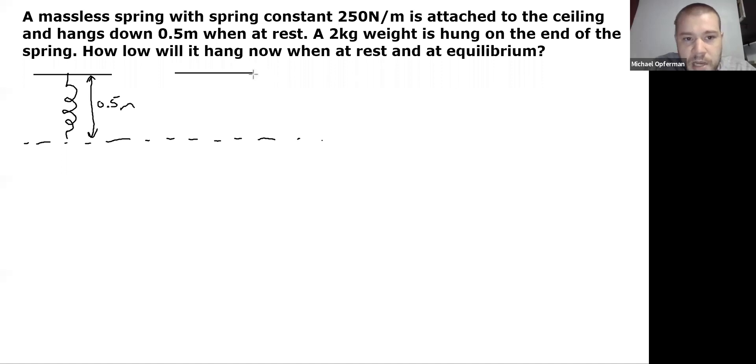Once we hang this object from the spring, it is going to cause it to sag downwards and get longer. So the spring is going to extend down maybe like this. There's my object when it's hanging down. The distance from the ceiling to the dashed line is still 0.5 meters.